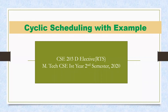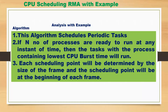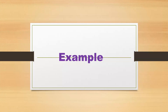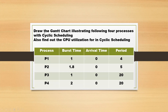In this class I shall discuss an example of cyclic scheduling. This algorithm schedules periodic tasks. If n number of processes are ready to run at any instant of time, the tasks with the shortest CPU burst time will run. Each scheduling point will be determined by the size of the frame, and the scheduling point will be at the beginning of each frame only. Now let us consider the example.